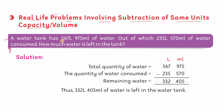A water tank has 567 liters 975 ml of water, out of which 235 liters 570 ml of water was consumed. اتنی total capacity تھی tank میں، جس میں سے اتنا use ہو گیا۔ How much water is left in the tank? یہ word 'left' ہمیں اشارہ دے رہا ہے کہ یہاں subtraction apply کرنی ہے — بقایا پانی tank میں کتنا ہے یہ معلوم کرنا ہے۔